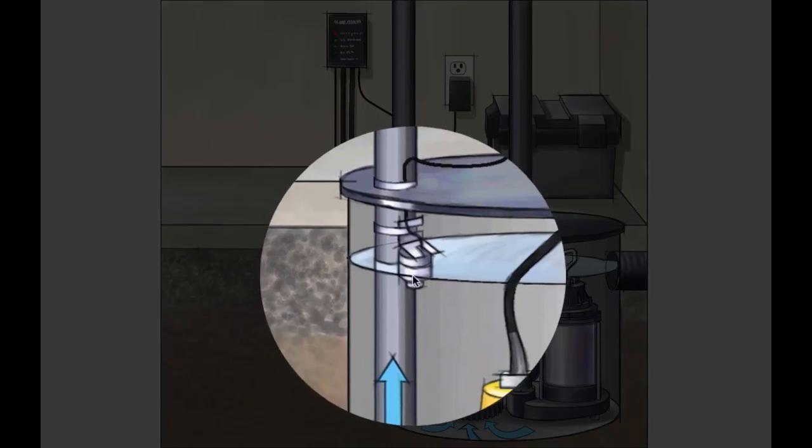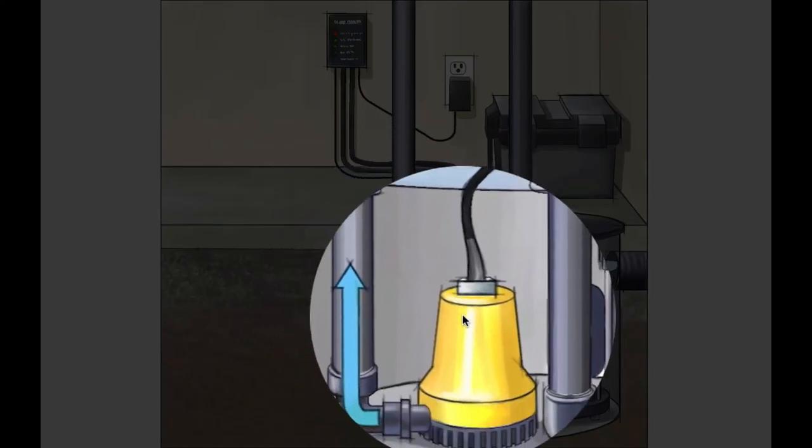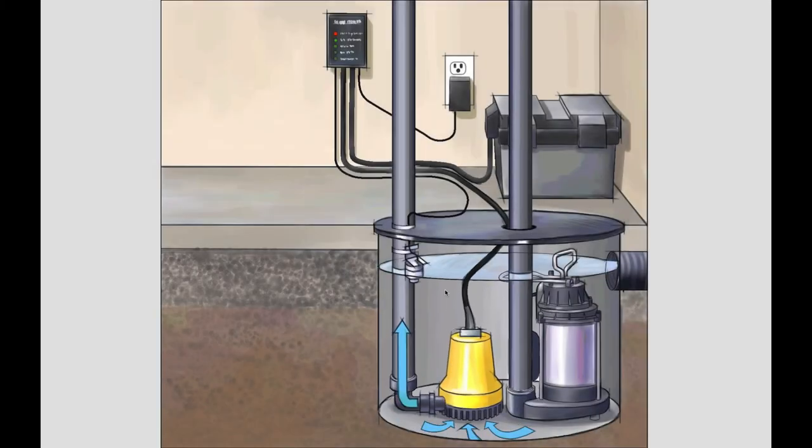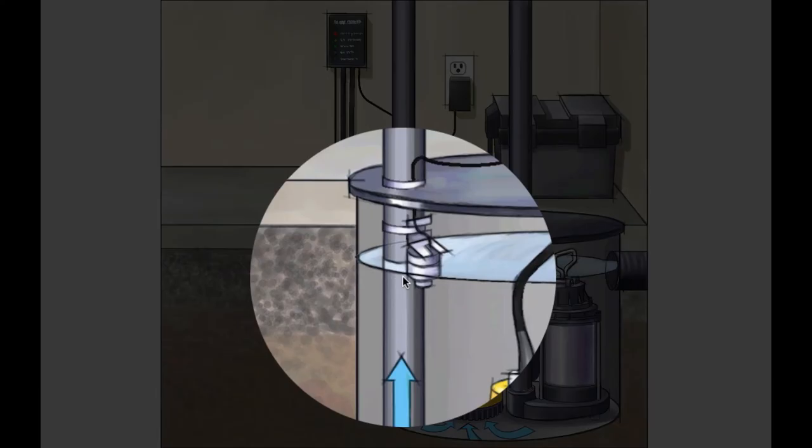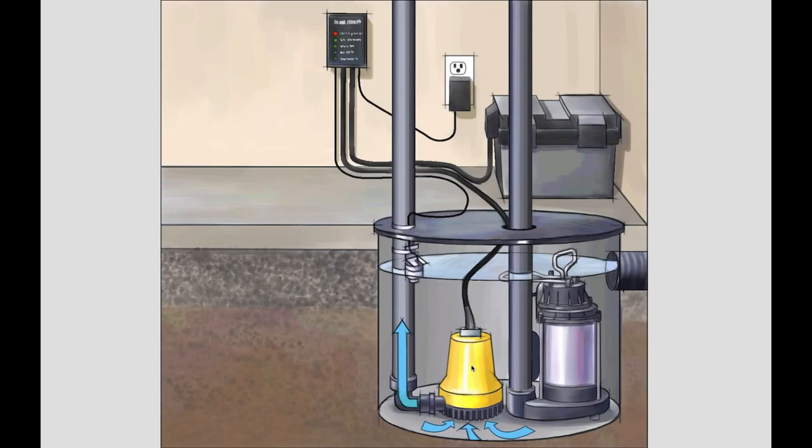So this battery pump's not going to come on until the water level rises, in this case, to that spot here, which is quite a bit higher than the activation point of the other pump. But the idea is that this really is a backup. So it won't come on unless the power goes out and inactivates the other pump. It will also come on if the other pump fails. So it gives you a lot of extra protection, which is what you need.